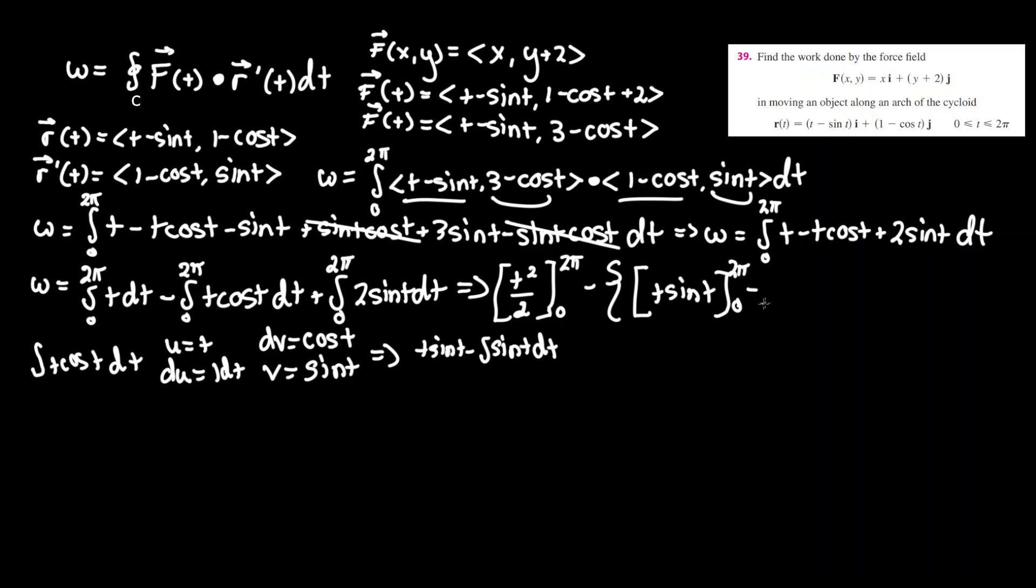And subtracted by the integral between 0 and 2pi as well of sine t dt. And that leaves us with the last term, integral between 0 and 2pi of 2 times sine t dt.